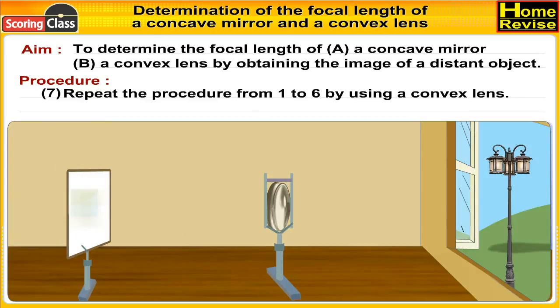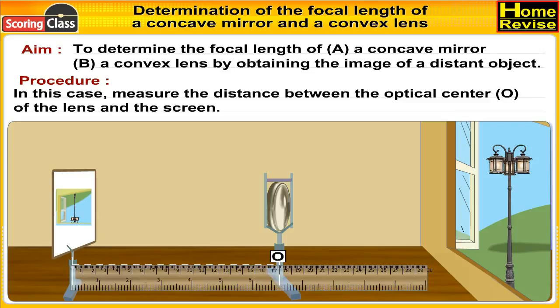Repeat the procedure from 1 to 6 by using a convex lens. In this case, measure the distance between the optical center of the lens and the screen.